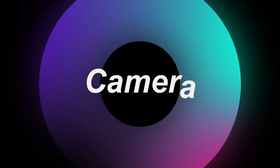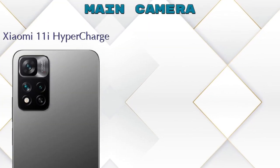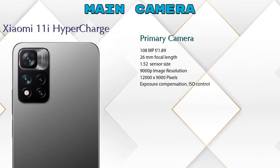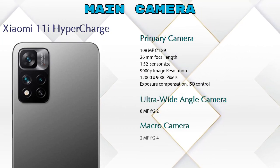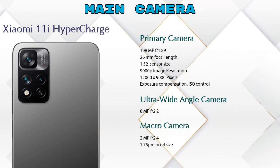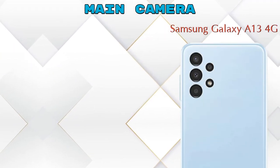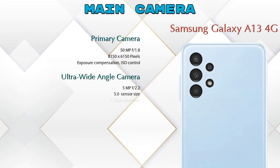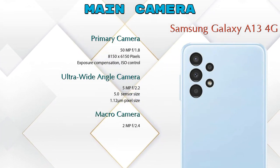Now let's look at the cameras. For the rear camera, the 11i HyperCharge has three cameras: a primary camera, an ultra-wide angle camera, and a macro camera. The Galaxy A13 4G has four cameras: a primary camera, an ultra-wide angle camera, a macro camera, and a depth camera.